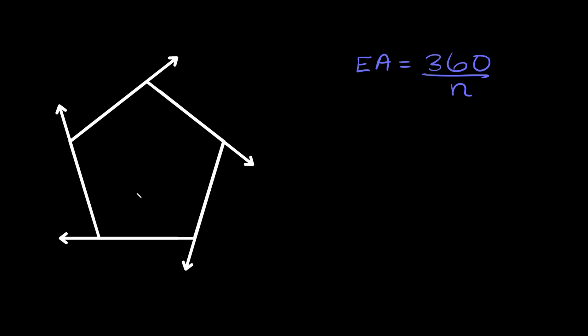So first let's start with just a regular polygon and remember a regular polygon is just a shape where all the sides and angles are congruent or in other words the same. So for instance on this pentagon it's just a regular pentagon and we want to find the measure of each of these exterior angles.